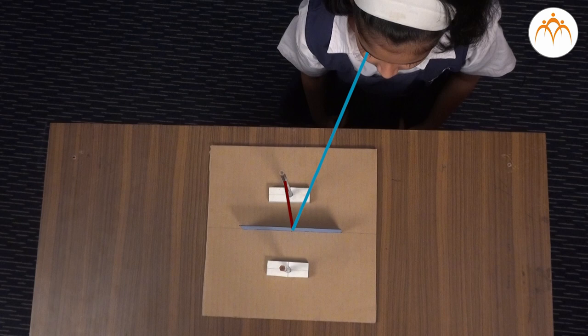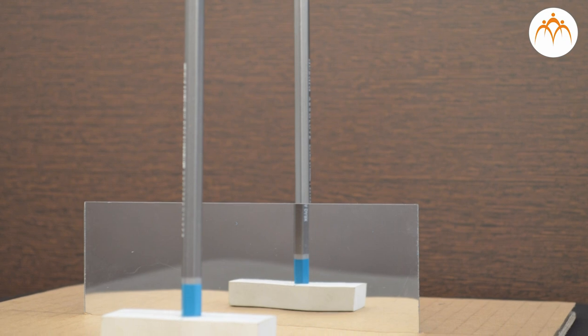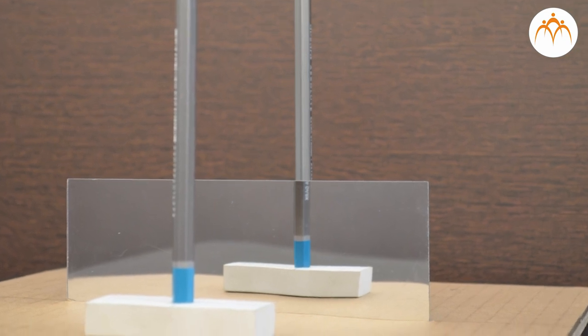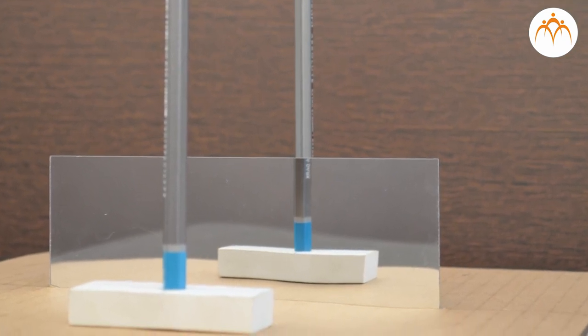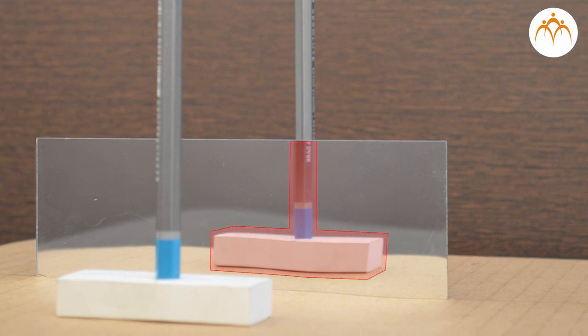When an object is viewed in a mirror, eyes take in rays that have been reflected. But the brain assumes that light rays have reached the eyes in a straight line. The brain works backward along the light paths and perceives an image behind the mirror. This virtual image does not exist.